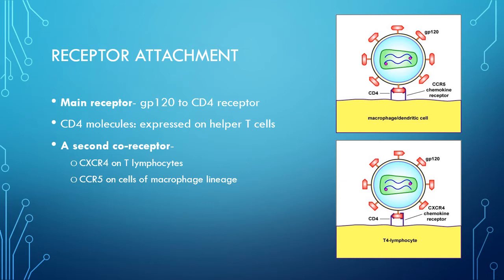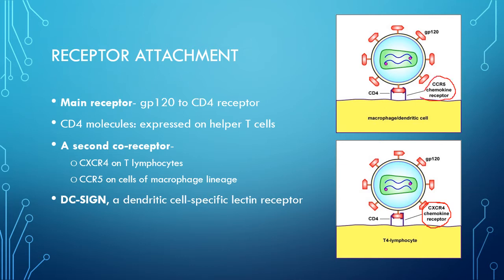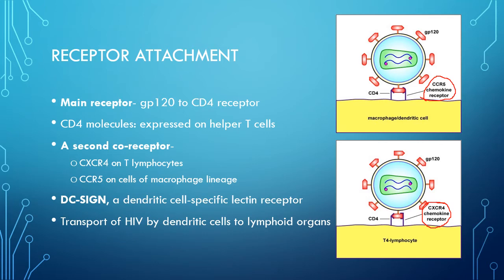A second co-receptor, in addition to CD4, is necessary for fusion of HIV to gain entry into the host cell. The chemokine receptor acts as a co-receptor by binding to gp120. Examples are CXCR4, present on T lymphocytes, and CCR5, on macrophage lineage cells. There is also DC-SIGN, a dendritic cell-specific lectin receptor present in skin and mucosal surfaces, which can bind to HIV-1 but does not mediate cell entry; rather, it may facilitate transport of HIV by dendritic cells to lymphoid organs where HIV replicates further in T cells.